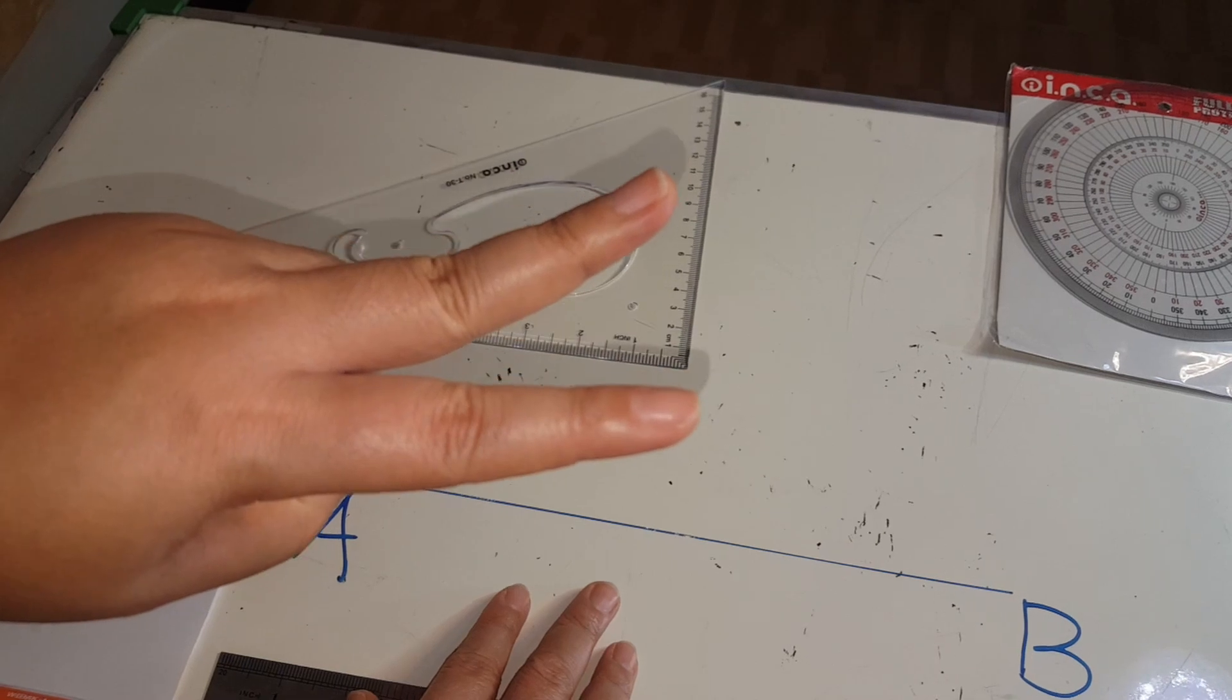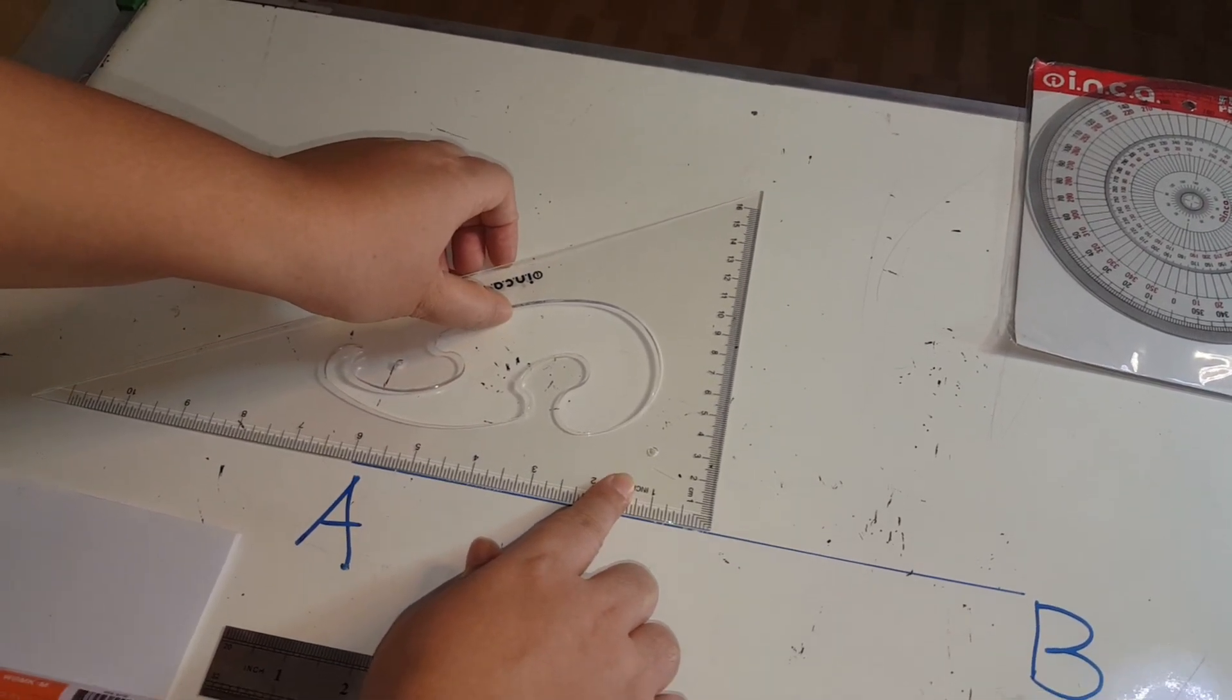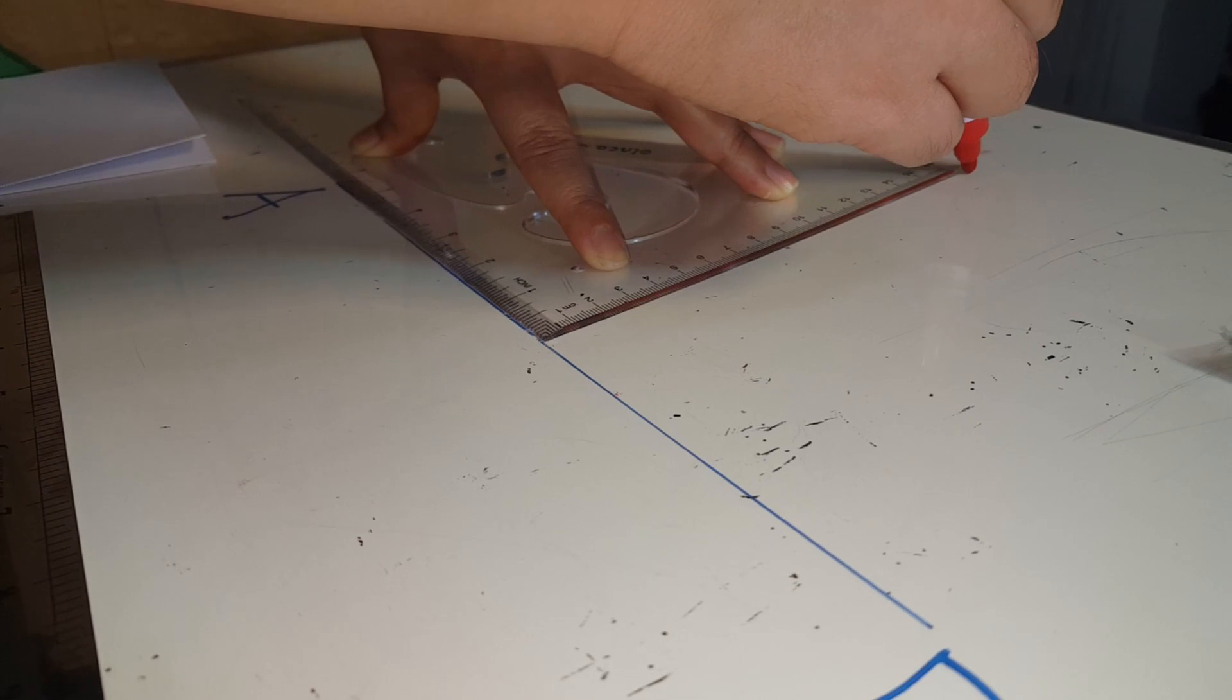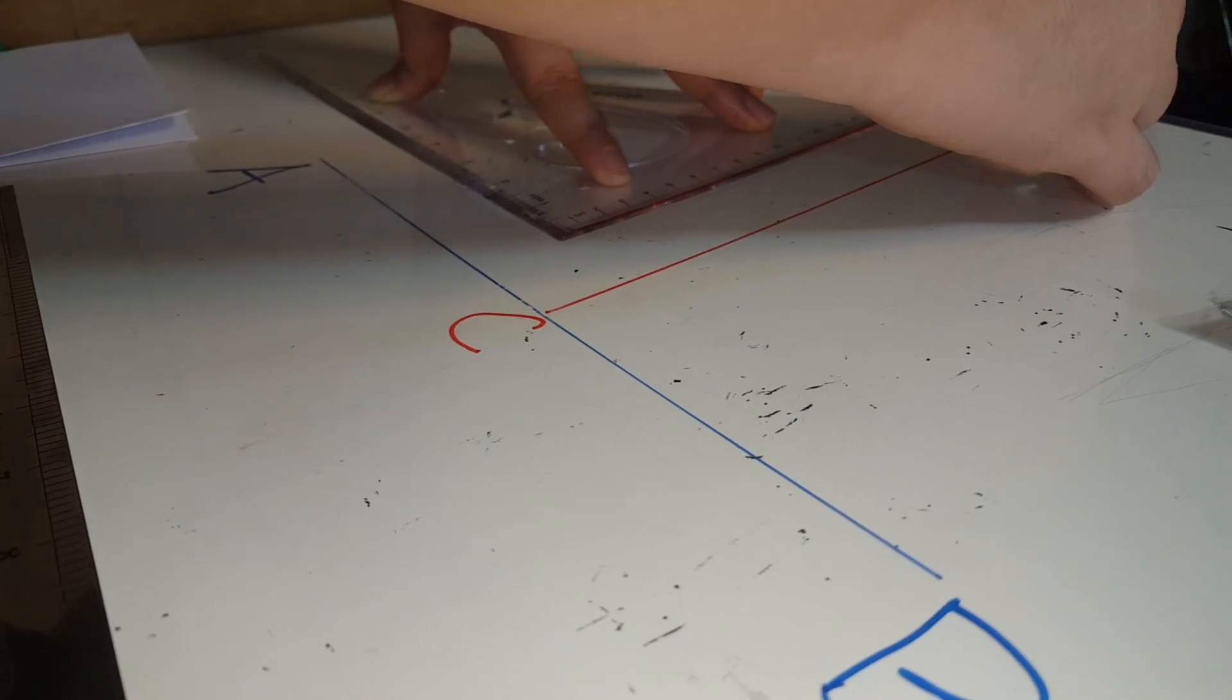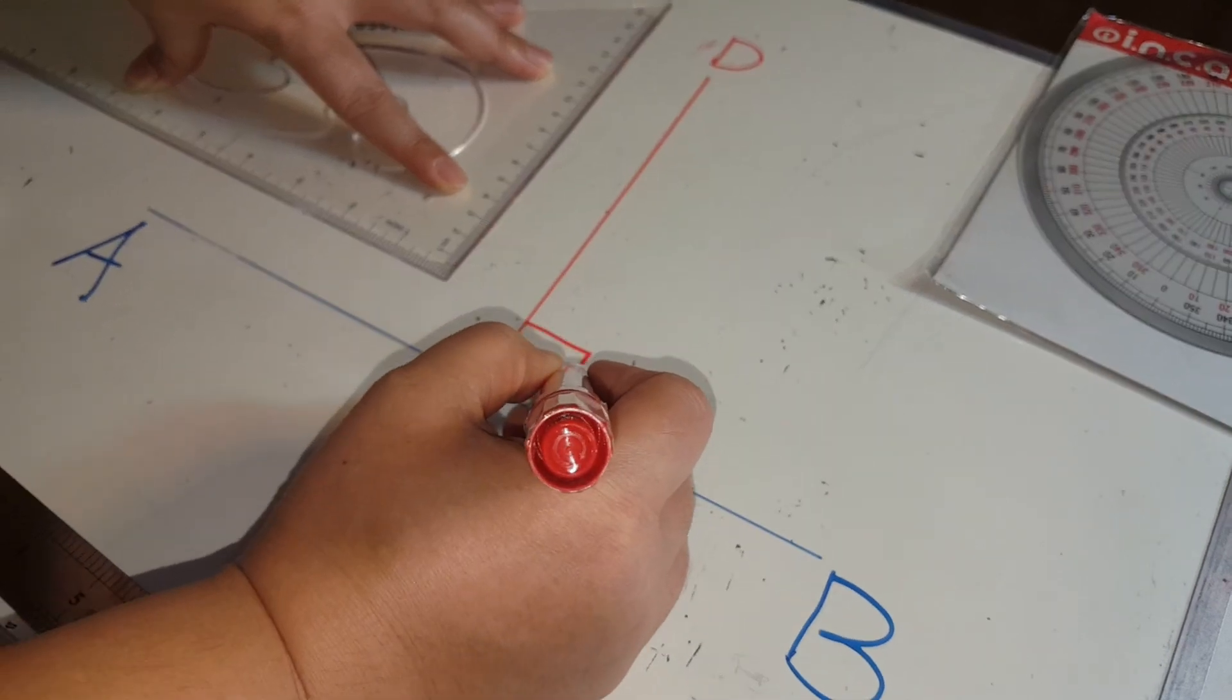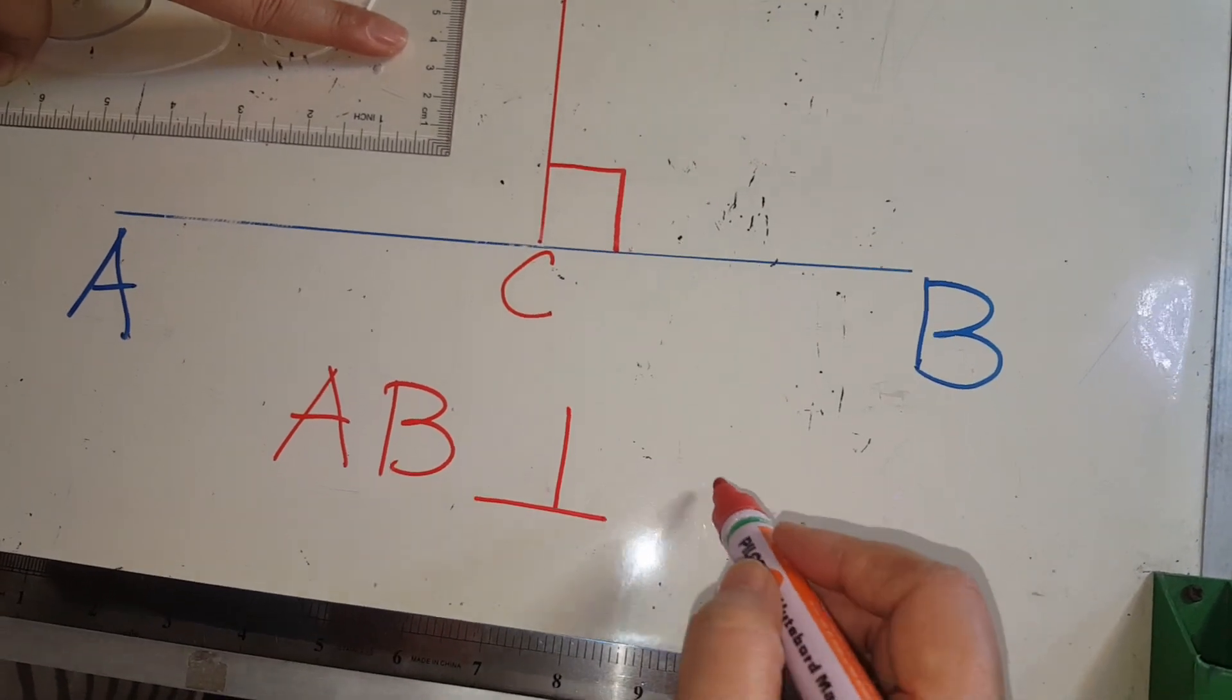Step number two. Put the set square against line AB. Step number three. Use the edge of the set square to draw line CD. Line AB is perpendicular to line CD because they form a right angle. We can say line AB is perpendicular to line CD.